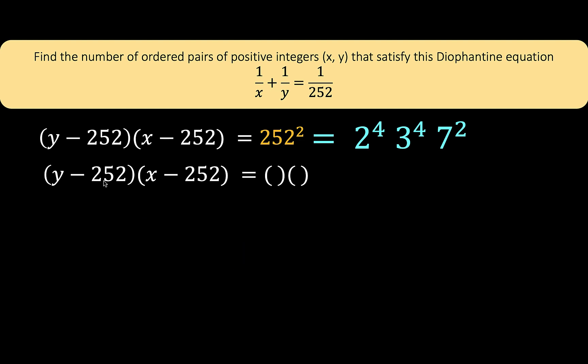Therefore, we now say that y minus 252 here must be positive, x minus 252 here must be positive, and the product is also positive 252 squared. There are 75 of them.